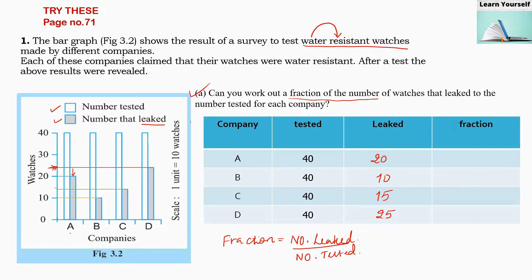Now we need to find the fraction of leaked watches to tested watches. For company A: 20 divided by 40 gives us 1/2. For company B: 10 by 40 gives 1/4. For company C: 15 by 40 gives 3/8. For company D: 25 by 40 gives 5/8.